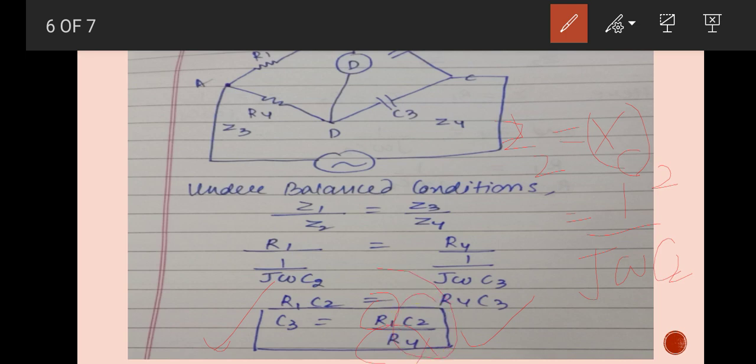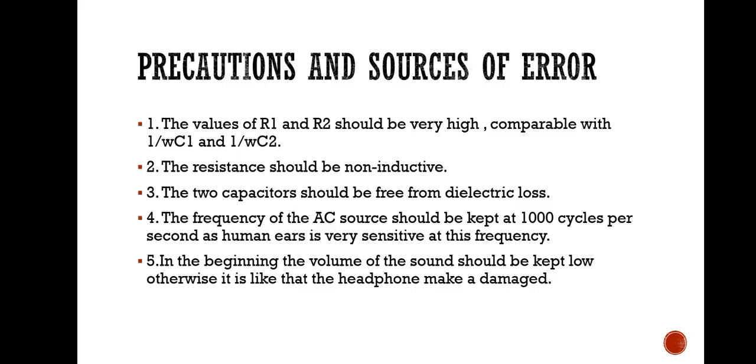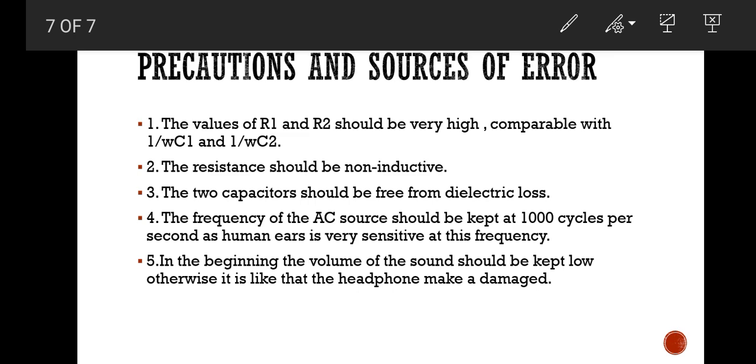Now, some precautions and sources of error. First thing is that R1 and R2 should be high, comparable to 1 divided by omega C1 and 1 divided by omega C2. Second thing is that our resistance is non-inductive. Third thing is that our capacitors are free from dielectric loss. The frequency should be 1000 cycles per second because our human ears are sensitive. And the sound volume should be low, otherwise the headphones can be damaged.